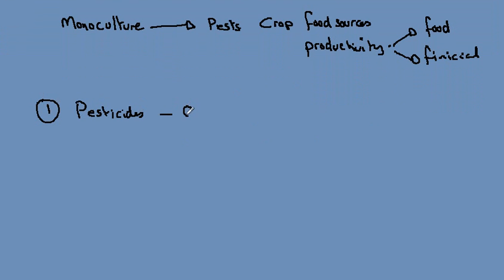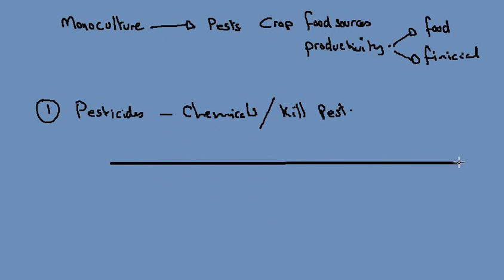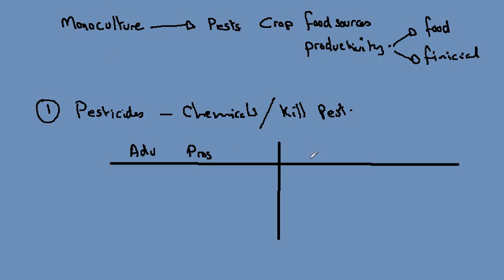Pesticides are chemicals which are designed to kill the pest. If we look at the pros and cons of using pesticides, on one side we will have the advantages, and on the other side we will have the disadvantages or negative impacts.